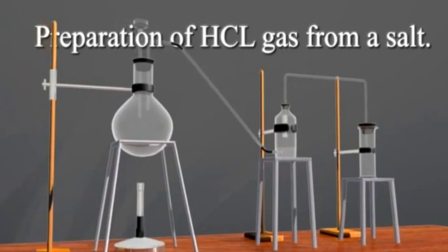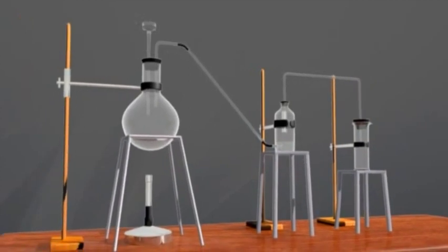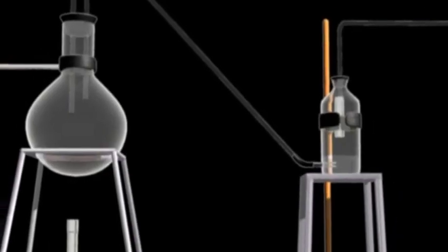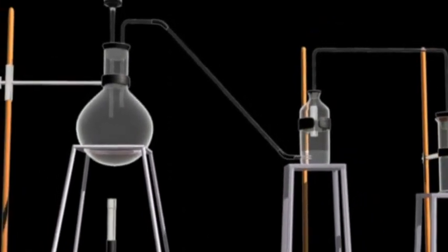In laboratory, hydrogen chloride gas can be prepared by reaction of concentrated sulfuric acid on sodium chloride.